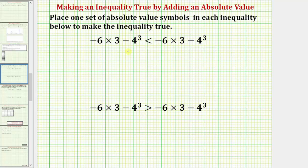Let's begin by simplifying both sides of the inequality. Looking at our expressions, we first simplify the exponents. Four to the third is equal to four times four times four, which equals sixty-four. This simplifies to negative six times three minus sixty-four, of course the same on the right.